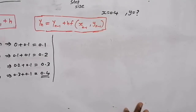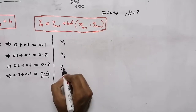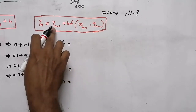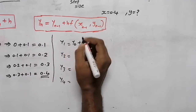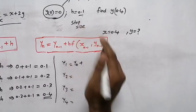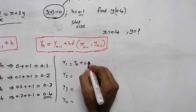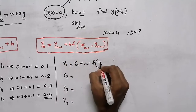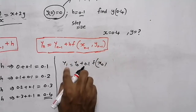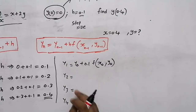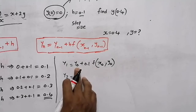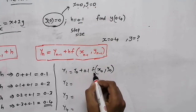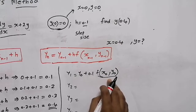Now we need to find the corresponding y values. The second equation is: y1 equals y0 plus h into f(x0, y0). The step size h is 0.1. We have y0, and we need to evaluate the function f, which is the differential equation dy/dx equal to x plus 2y.